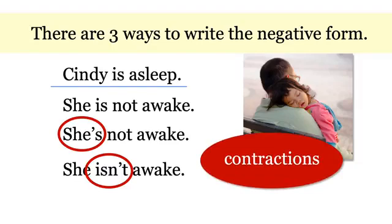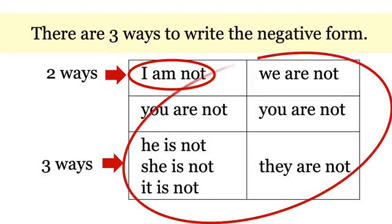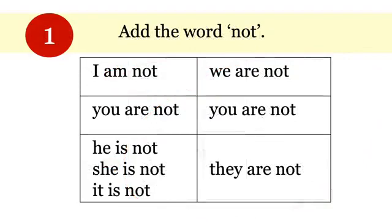Let's take a closer look. There are three ways to write the negative form — actually, that's not entirely true. There are only two ways for 'I am,' for first person. But there are three ways for all of the other forms. The first way you know: add the word 'not.' I am not. You are not. This is simple.